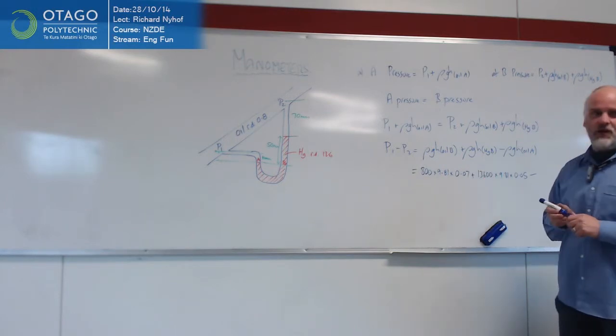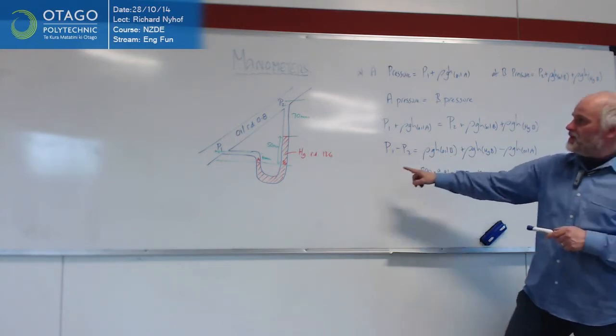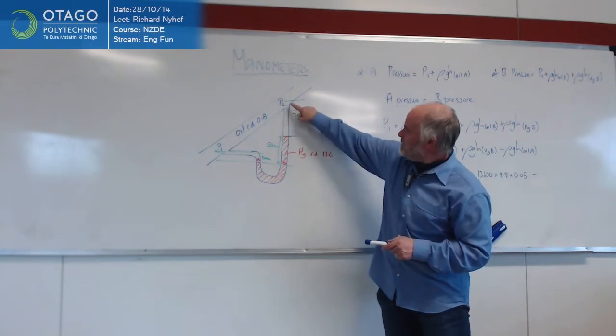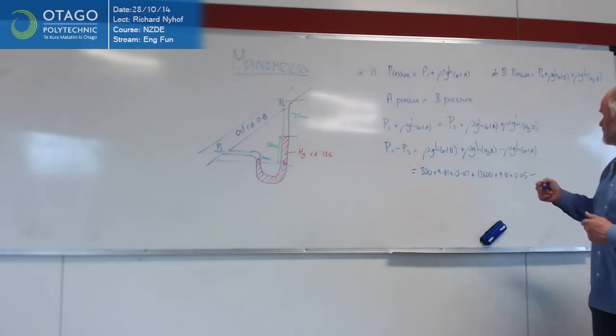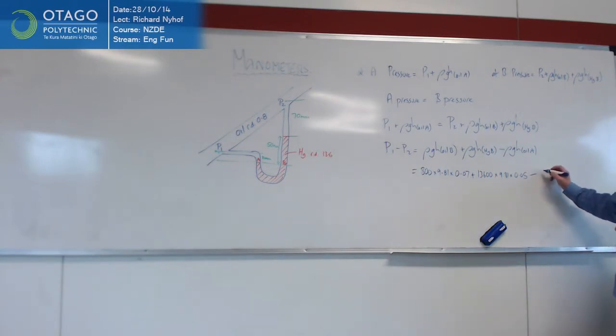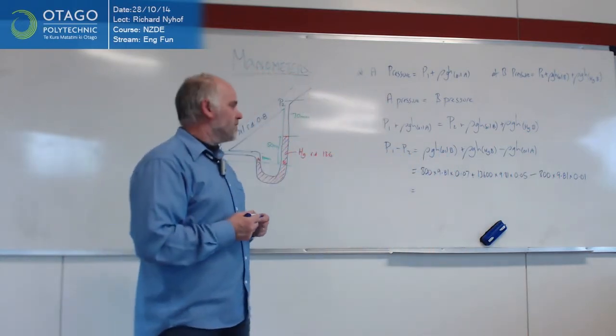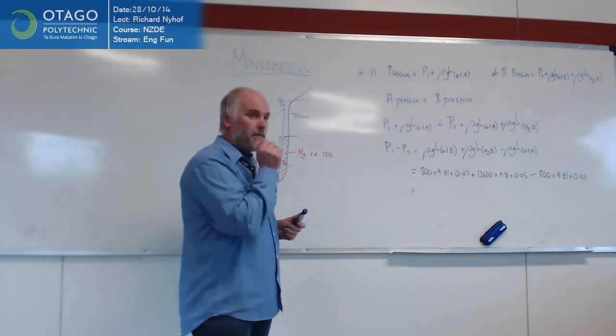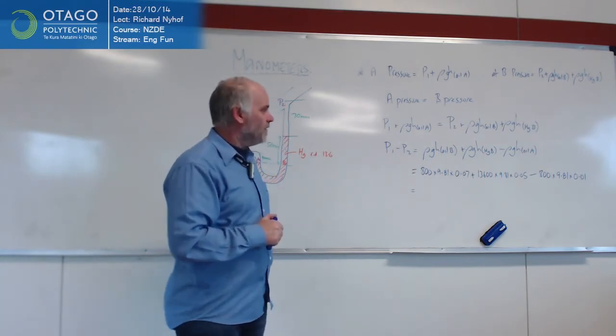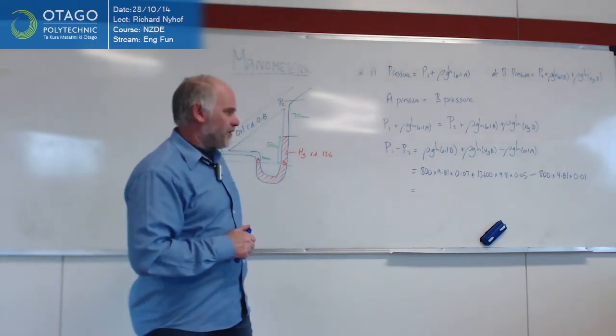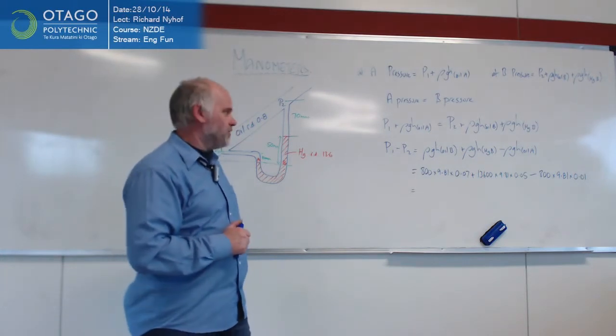Thank you, Sam. It's exactly right. Because that was the oil at point B. The point B, the oil at point B, that was the head at point B was 70 millimetres. So this is the one that's 10 millimetres. And then you need to grab a calculator and thrash away and come up with an answer for all of that lot. And that'll tell you what the pressure differential between the two parts is.